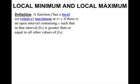Now we're going to look at what are called local minimum and local maximum. A function f has a local, or sometimes called relative, maximum at x equals c, if there is an open interval containing c such that in that interval, f of c is greater than or equal to all other values of f of x.